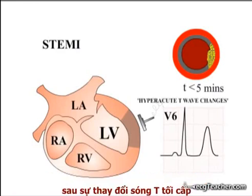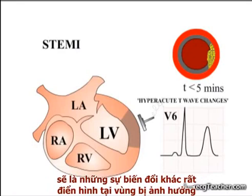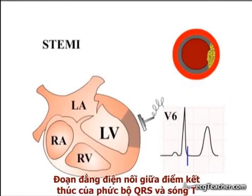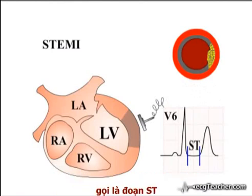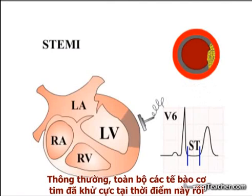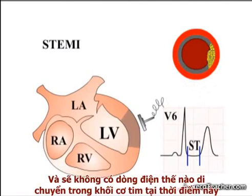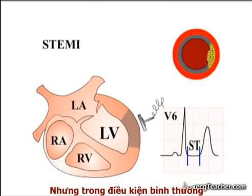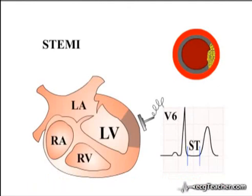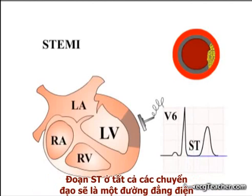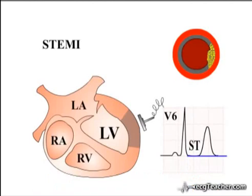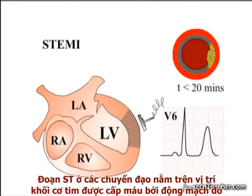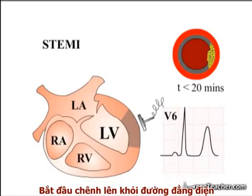In these early stages, hyperacute T wave changes are followed by a very characteristic ECG abnormality in the affected leads. The line on an ECG readout connecting the end of the QRS complex and the T wave is called the ST segment. Normally, all myocytes are depolarised at this time and there is no electrical flow in the cardiac muscle. Under normal circumstances, as there is no electrical activity present at this time, the ST segments in all leads are expected to lie on the isoelectric line. In the minutes following hyperacute T wave changes, the ST segments in leads overlying the myocardial region deprived of arterial blood supply begin to rise above the isoelectric line.